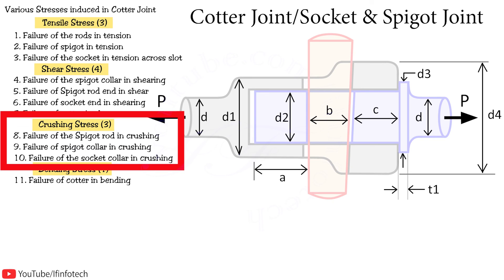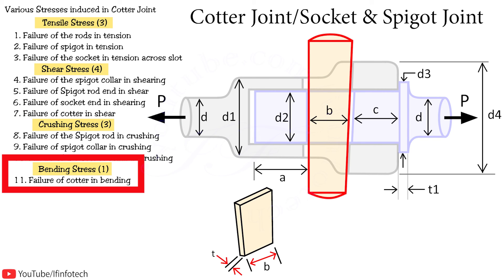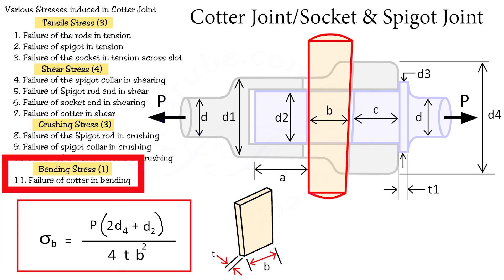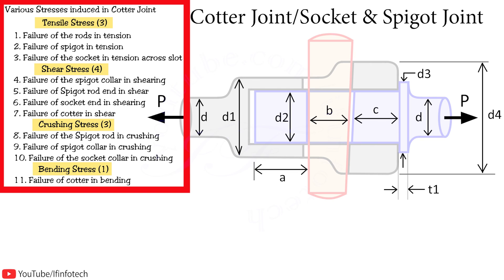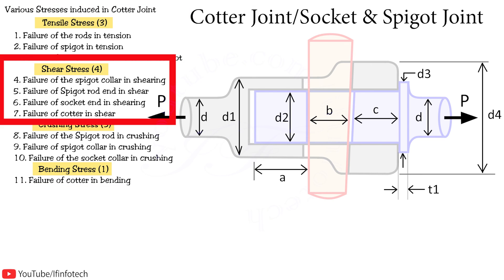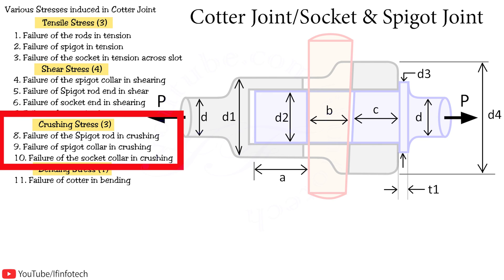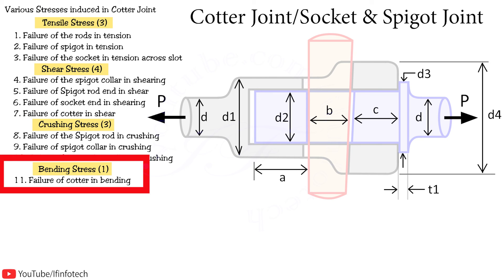So these are the 3 crushing stresses in cotter joint. The next stress is bending stress. The failure occurs due to bending stress in the width of cotter. The formula is load P times (2d4 plus d2) divided by 4 times t times b squared, where t is the thickness of cotter and b is the mean width of cotter. So there are a total of 11 types of stresses in cotter joint: 3 tensile, 4 shear, 3 crushing, and 1 bending stress.